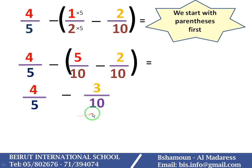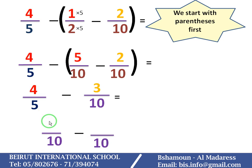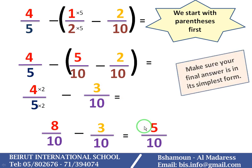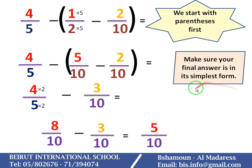Again, I don't have the common denominator, so I have to find it. 10 is a multiple of 5, so my common denominator is 10. To get denominator 10, I multiply the 5 by 2, so I multiply the 4 by 2, and then I get 8 over 10 minus 3 over 10, which is equal to 5 over 10. As I said, I have to write my answer in simplest form.